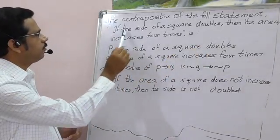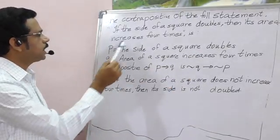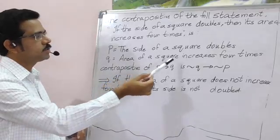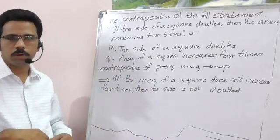Here I am taking first statement as P: the side of a square doubles. Second statement as Q: area of a square increases 4 times. Here what he is asking, contrapositive of this statement.